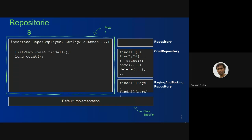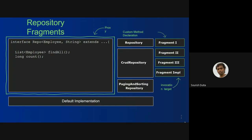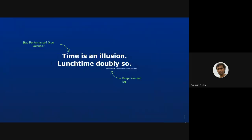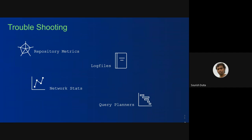We know the default implementation repositories. You can also create your own repository interfaces — like repository, CRUD repository, paging and sorting repository — with your own set of methods which can be further extended and implemented. For troubleshooting, you can look into the log file, the query explanation, the network stack, and the metrics. Any questions on the basic Spring Data concept?